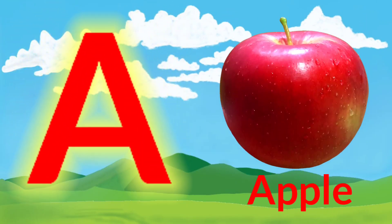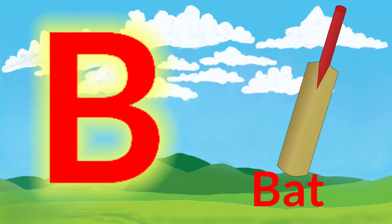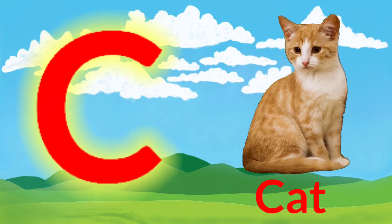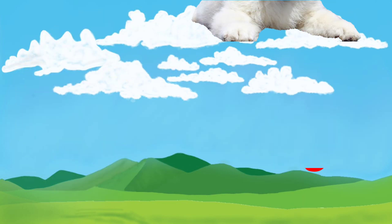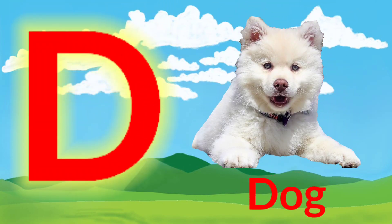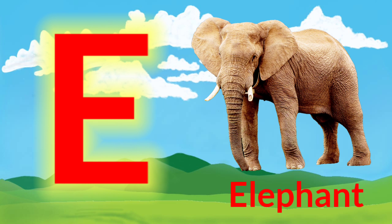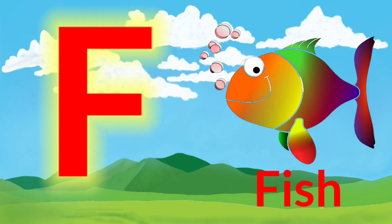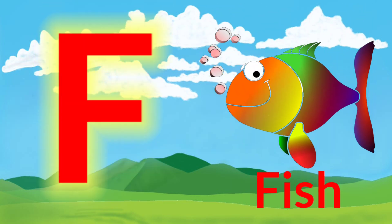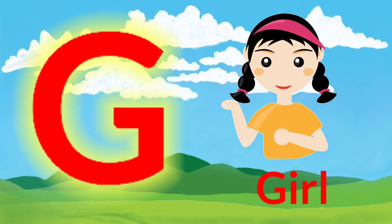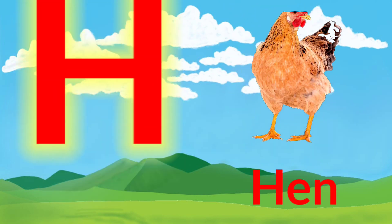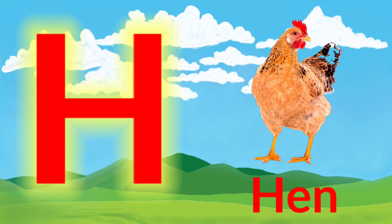A for apple. B for bat. C for cat. D for dog. E for elephant. F for fish. G for girl. H for hen.